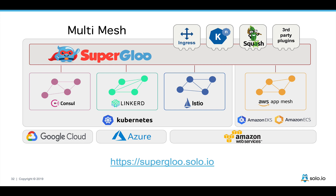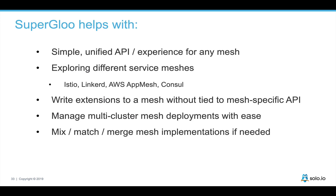The idea with Superglue is to simplify the API so that we can get consistent behavior regardless of what mesh we're actually using. Superglue does other interesting things like allowing us to write extensions to our Service Mesh without tying to any specific API, allows us to manage multiple clusters of a particular implementation of a Service Mesh, and allows us to merge or mix and match Service Mesh implementations as needed.